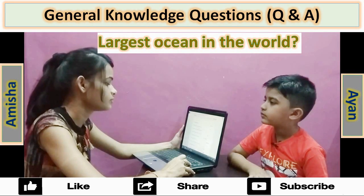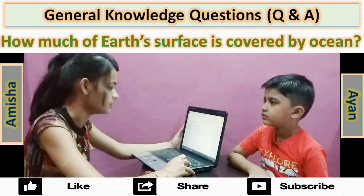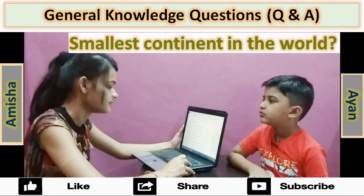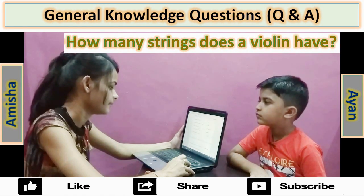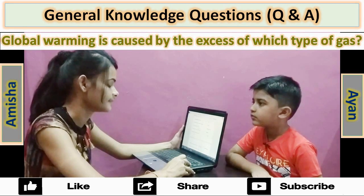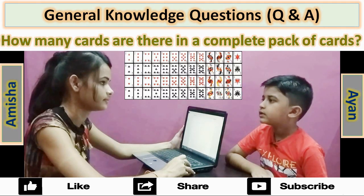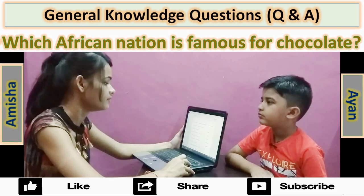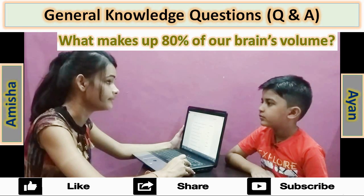Largest ocean in the world? Pacific Ocean. How much of Earth's surface is covered by ocean? 71%. Hottest continent on Earth? Africa. Smallest continent in the world? Australia. How many strings does a violin have? 4. Global warming is caused by the excess of which types of gas? Carbon dioxide. How many cards are there in a complete pack of cards? 52. Biggest rainforest in the world? Amazon. Which African nation is famous for chocolate? Ghana.